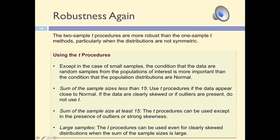T procedures with two samples are more robust to non-normality than the one-sample T methods. In general, the condition of having randomly selected samples is more important than the shape of the distribution. Also, we must make sure that we have an adequate sample size. When the two sample sizes add up to less than 15 individuals, we can only use T procedures if the distribution is close to normal. However, when the samples are large, the T procedures can be used even when the distribution is not normal, if there are no strong outliers.